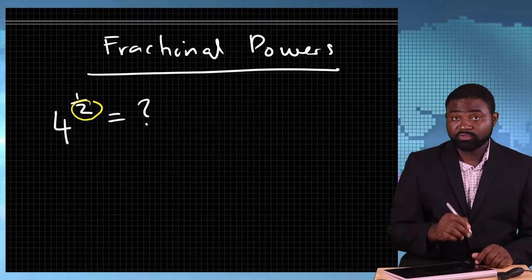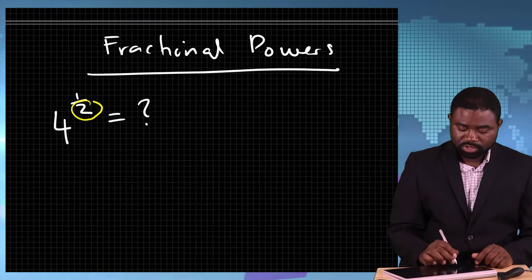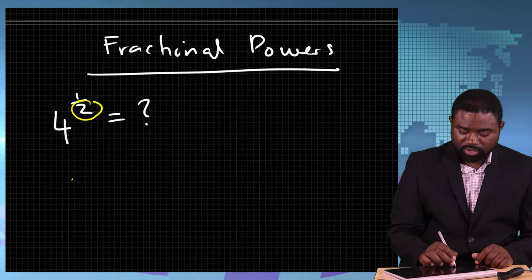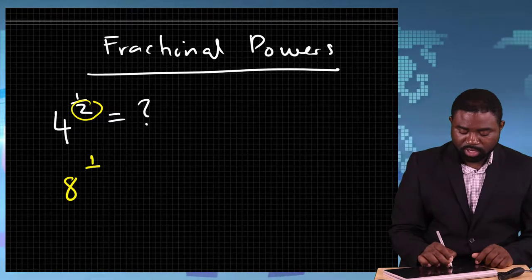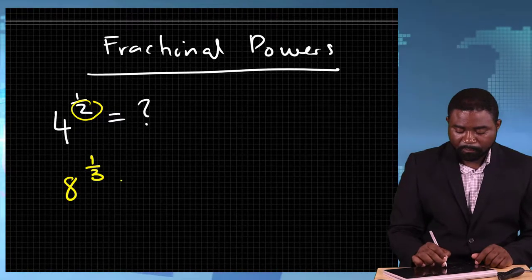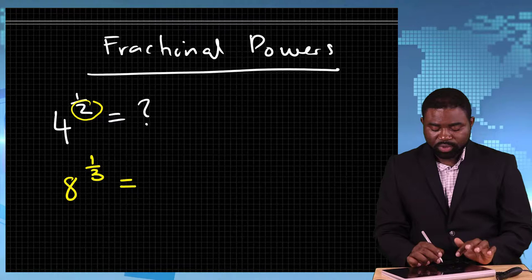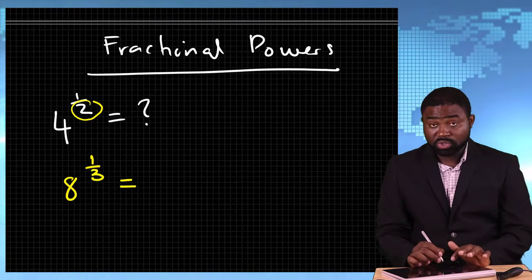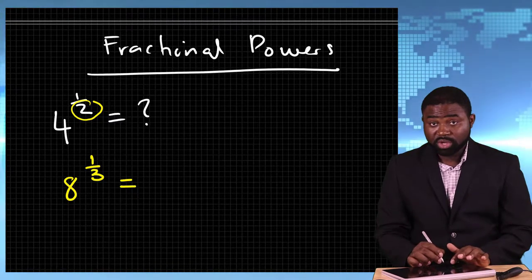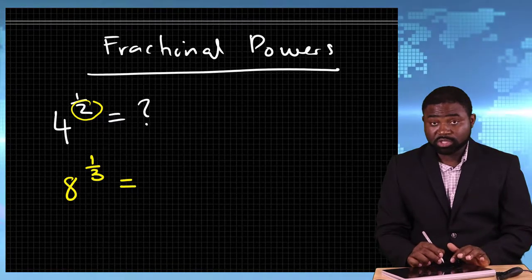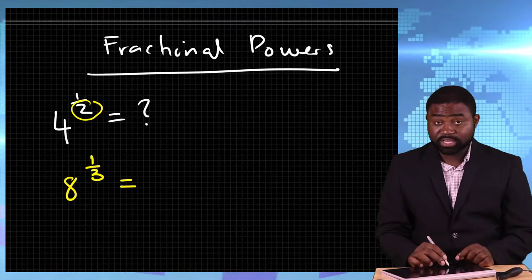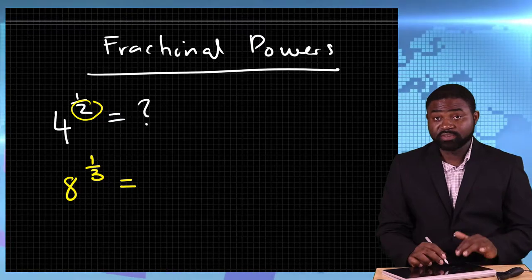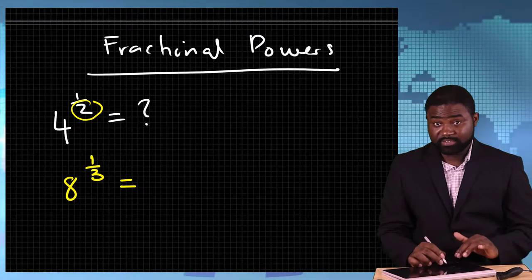If we write the number 8 raised to the power 1 third, in this case we are looking for a number which, when multiplied by itself three times, will give the number 8.